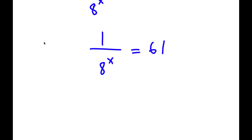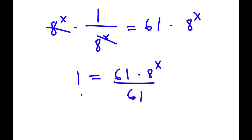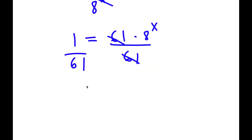I can just write this as 1 over 8 to the power of x is equal to 61. Now I'm going to go ahead and multiply both sides by 8 to the power of x. These two cancel out, and I have 1 is equal to 61 times 8 to the power of x. Now I'm going to divide both sides by 61, and I have 1 over 61 is equal to 8 to the power of x.